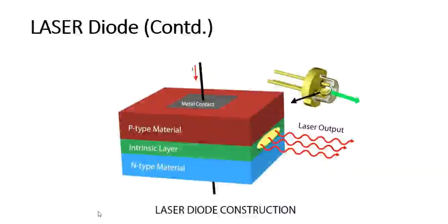Coming up next is the construction of laser diode. Here you can see the various components that make up a single laser diode. This is the structure of the laser diode — a three-terminal device. The first component is a metal contact. Top and bottom, it has a metal contact through which voltage can be applied. It is a normal PN junction diode where you can give positive and negative connections, and it has a P-type, N-type material, and an intrinsic layer. This intrinsic layer is called the junction.